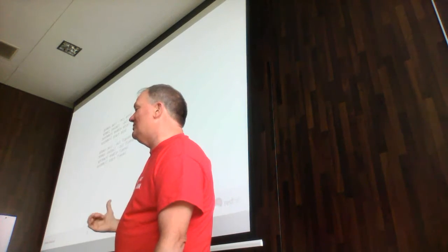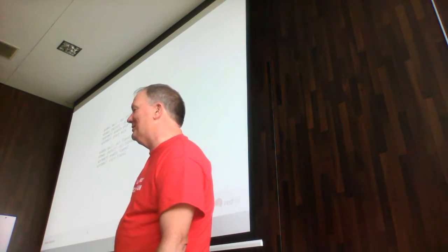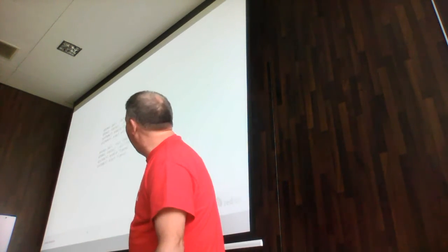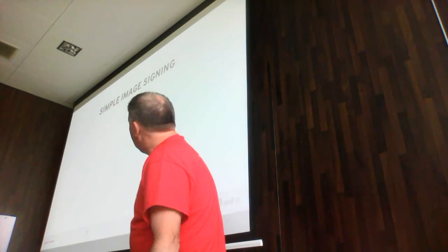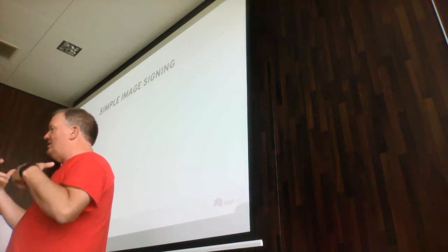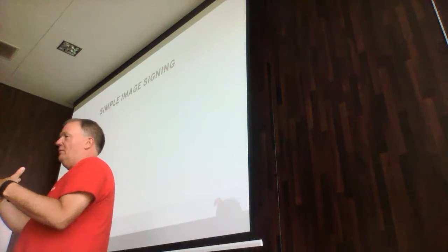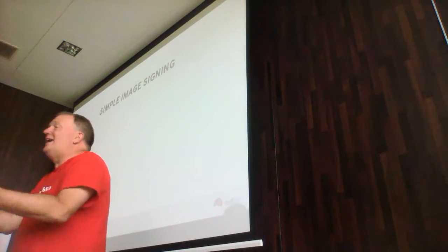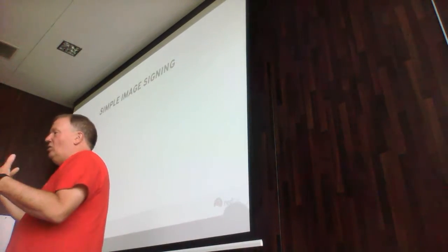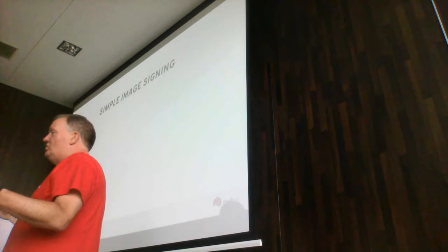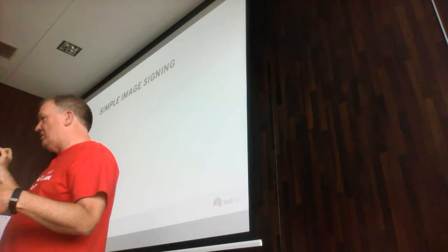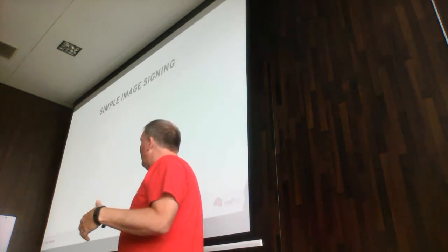With system containers, we're using runc, systemd, and OSTree for the back-end store. For the container, you can update it — when a new version of etcd comes out, you use a tool like Docker or another tool to build a new image, push it to a registry, and this tool would pull it down. Again, it's in production — you're not developing it, you're using it in production.